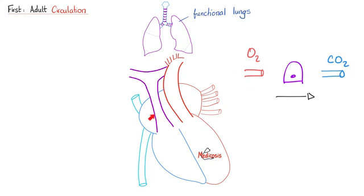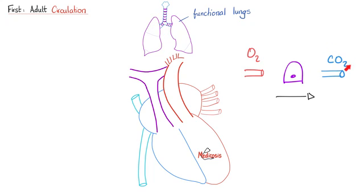We are here in the right atrium. The right atrium is going to push blood to the right ventricle through the tricuspid valve. Deoxygenated blood is here in the right ventricle. The right ventricle is going to pump this deoxygenated blood into the pulmonary trunk, then the right pulmonary artery and left pulmonary artery, carrying the deoxygenated blood to the lungs. The lungs will take that carbon dioxide, breathe it out, and breathe oxygen in.